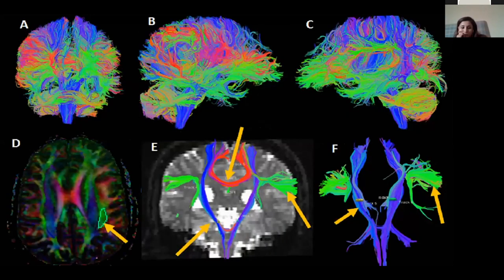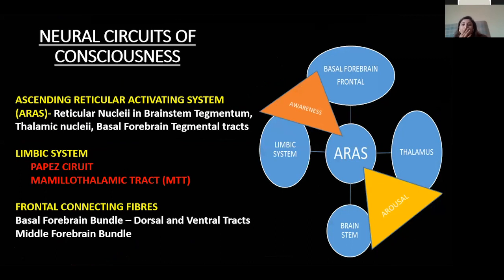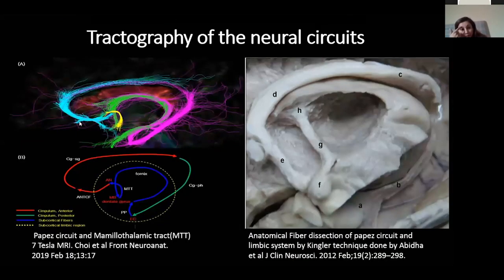This is how normal fiber tracking in a normal brain looks — color coded red, blue, and green. To apply this to studying consciousness and cognitive dysfunction, we need to understand the basis of consciousness. The ARAS — the brainstem and thalamus — forms the core of arousal. The awareness system involves the limbic system, the Papez circuit, the mammothalamic tract, and the basal forebrain bundles, which govern emotion, behavior, and memory. This is illustrated on a 7 Tesla MRI tractography taken from a paper by Choi et al., based on anatomical fiber tracking by Klingler technique.